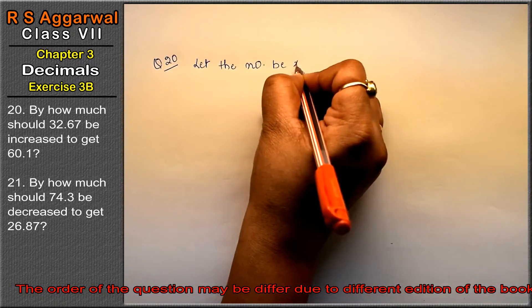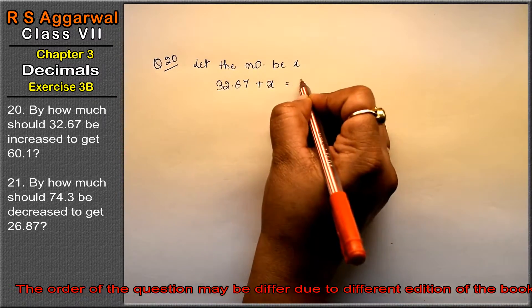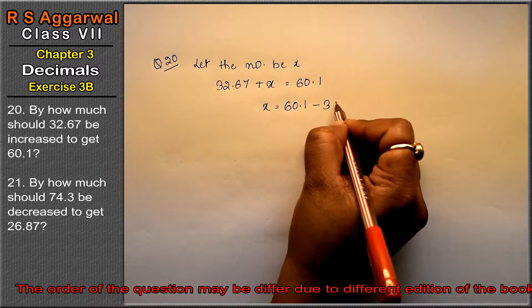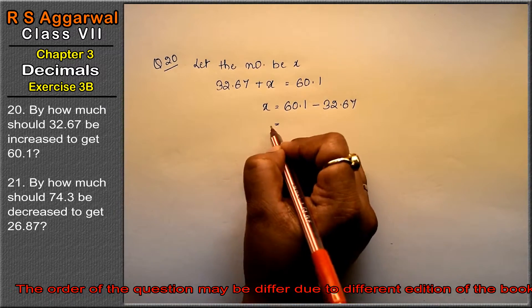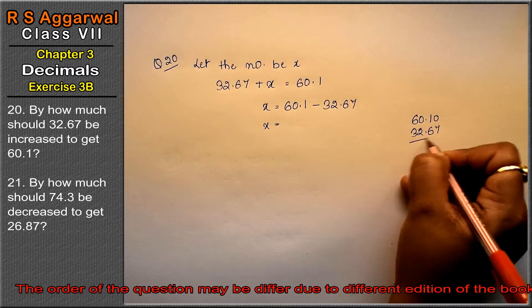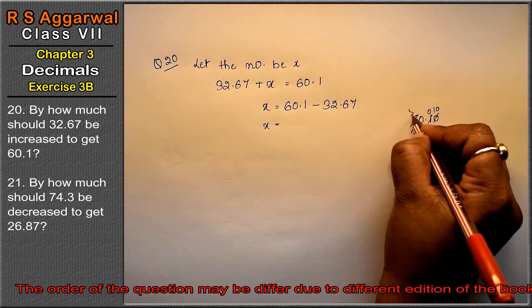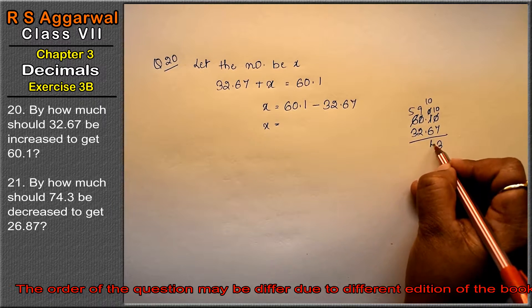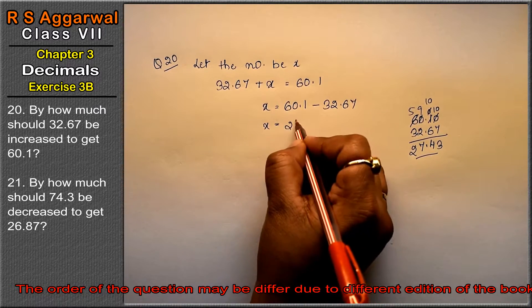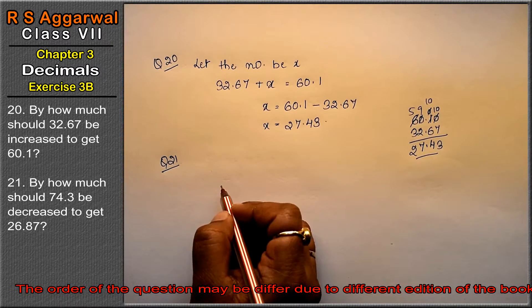x. So we will increase 32.67, so this is 60.1. So x is our answer. 60.1 is our result, so this is 32.67 minus. Now see, 60.1 minus 32.67. Here 0 came, so this is 10, this is 0, 10 minus 7 is 3, this is 5, this is 9 and it has carried 1. 10 minus 6 is 4, 9 minus 2 is 7, 5 minus 3 is 2. That means 27.43 is the answer.